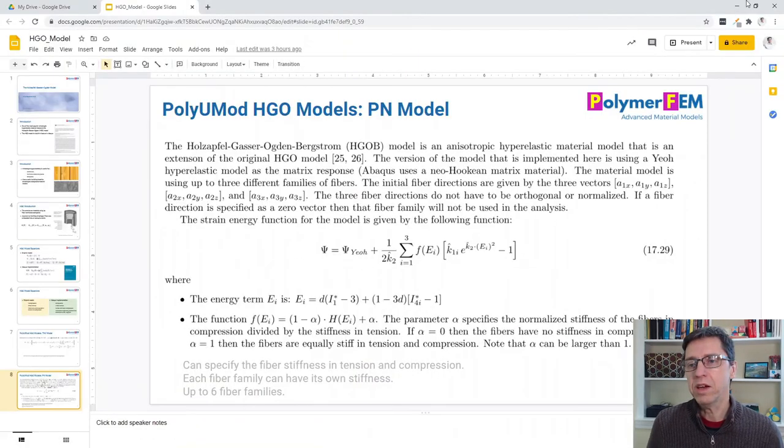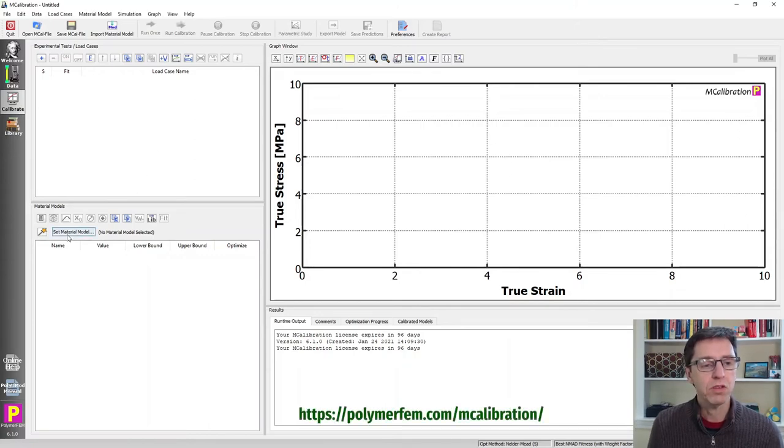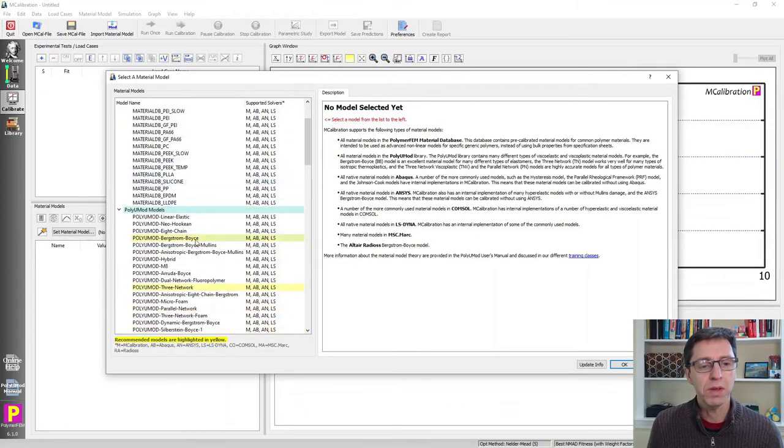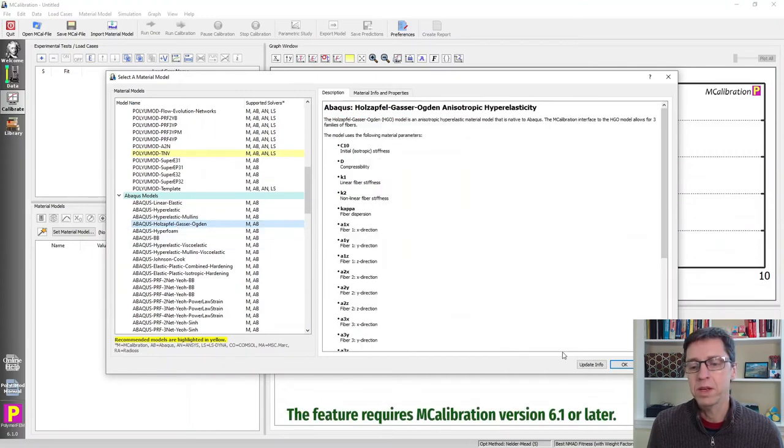What I want to do next is demonstrate a little bit how this works in practice. So I'm going to demonstrate using MCalibration how you can work with the Abaqus HGO model. So let's just select the material model. I go to the set material model. I scroll down to Abaqus, Hyper, Abaqus, Holzapfel-Gasser-Ogden, and I say OK.